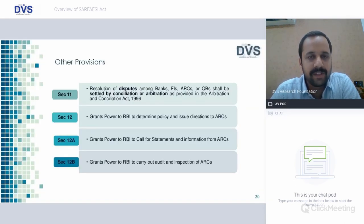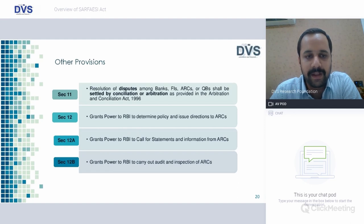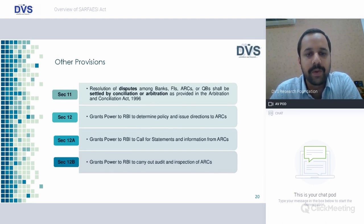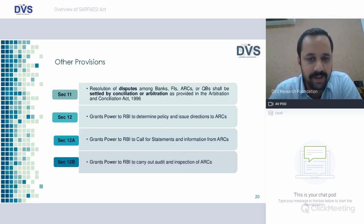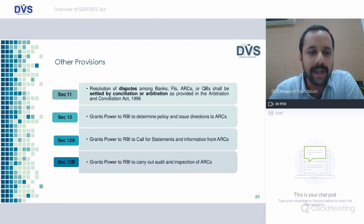Other provisions: Section 11 speaks about resolution of disputes among banks, financial institutions, ARCs, and qualified buyers, which shall be settled by conciliation and arbitration as provided in the Arbitration and Conciliation Act 1996. Section 12 grants powers to RBI to determine policy and issue directions to ARCs; Section 12A grants power to RBI to call for statements and information from ARCs; and Section 12B grants power to RBI to carry out audit and inspection of ARCs.